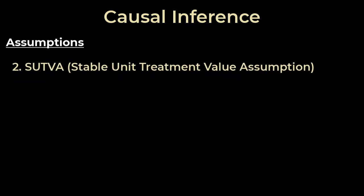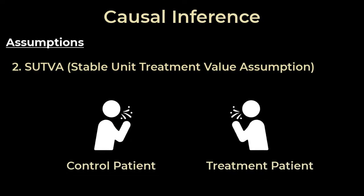Another assumption we make is SUTVA — the stable unit treatment value assumption — which states that a sample in the control group doesn't affect the samples in the treatment group. This assumption is required to prevent any interaction effects, and for our medical example this is true: we don't have people who receive the elixir influencing the people who don't.